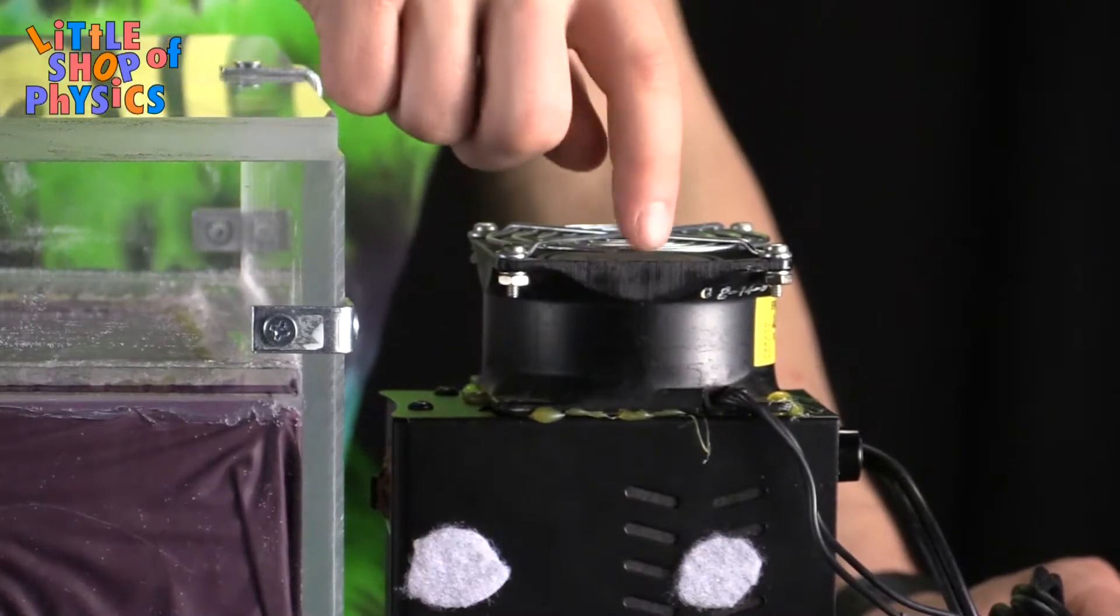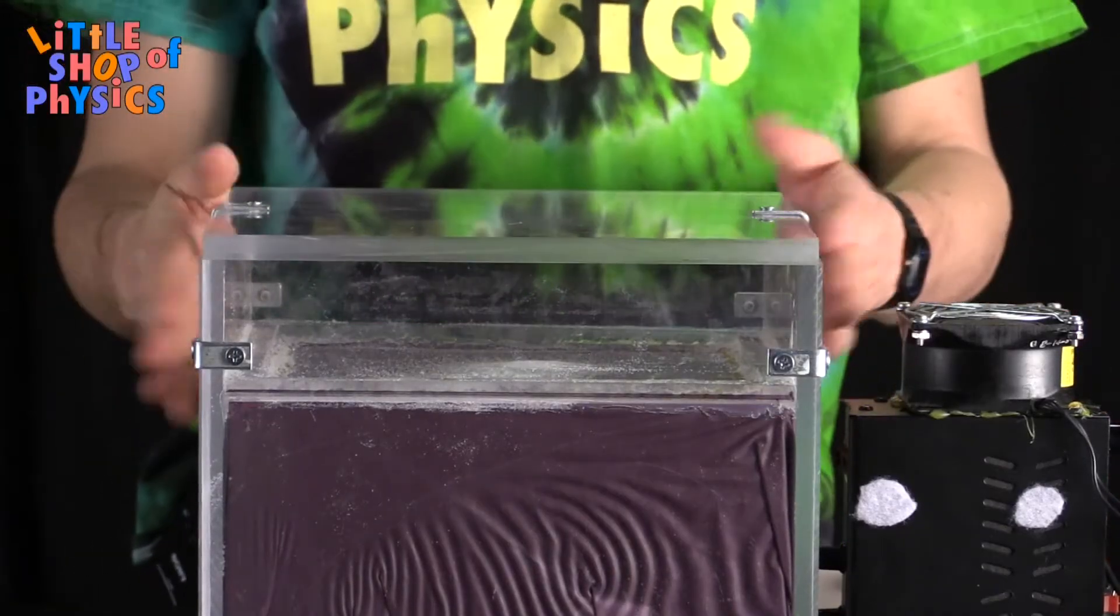That singing signal, the electrical signal, goes to the amplifier, is amplified, then goes to the speaker underneath this box.